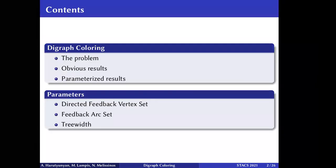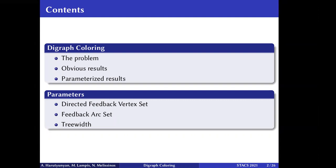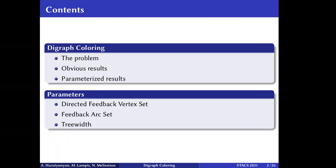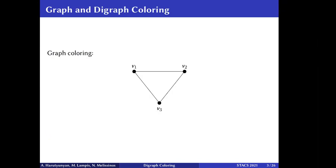I will first present the problem and its relation with classic graph coloring. After that, I will give some easy and obvious results, and continue with parameters based on directed feedback vertex set, feedback arc set, and tree width.